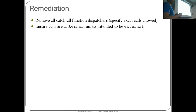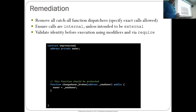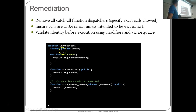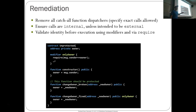Ensure that all calls you want uncallable externally are labeled internal. Validate identity before execution using modifiers and require statements. Here's an example: an unprotected contract with a broken changeOwner that sets the owner to whatever the person specifies and it's public. To protect it, build a modifier called onlyOwner that checks if message.sender is the owner before calling. Then change the changeOwner function to add the onlyOwner modifier. This is the pattern you should have in your smart contracts for any protected functionality that only an administrator should implement.